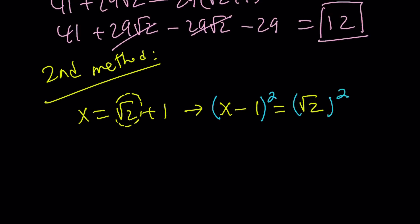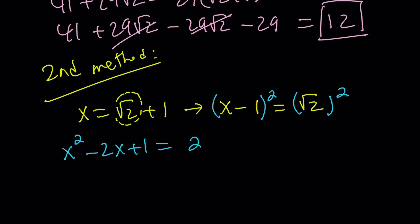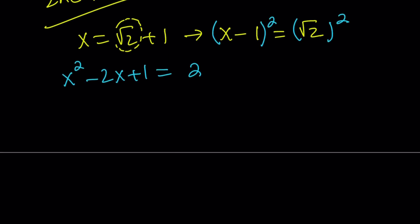If you square x - 1, you get x^2 - 2x + 1, and (√2)^2 = 2. So here, for our purposes, I'm going to isolate the highest power. I'm going to use a polynomial approach. Add 2x and subtract 1, you're going to get x^2 = 2x + 1.